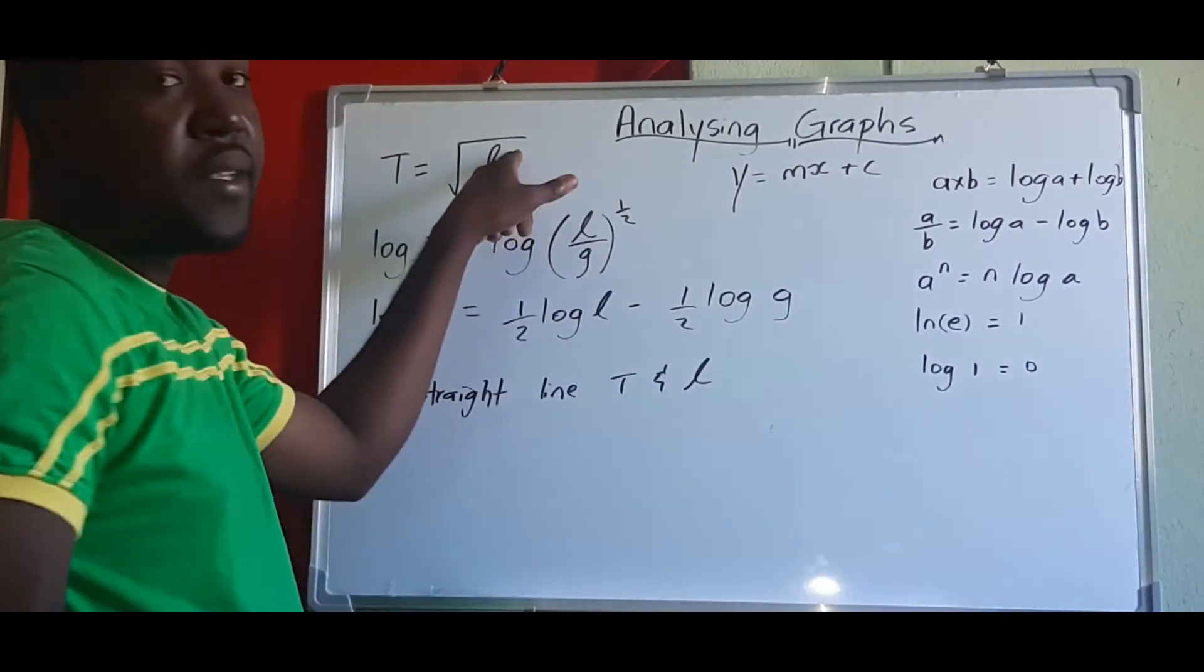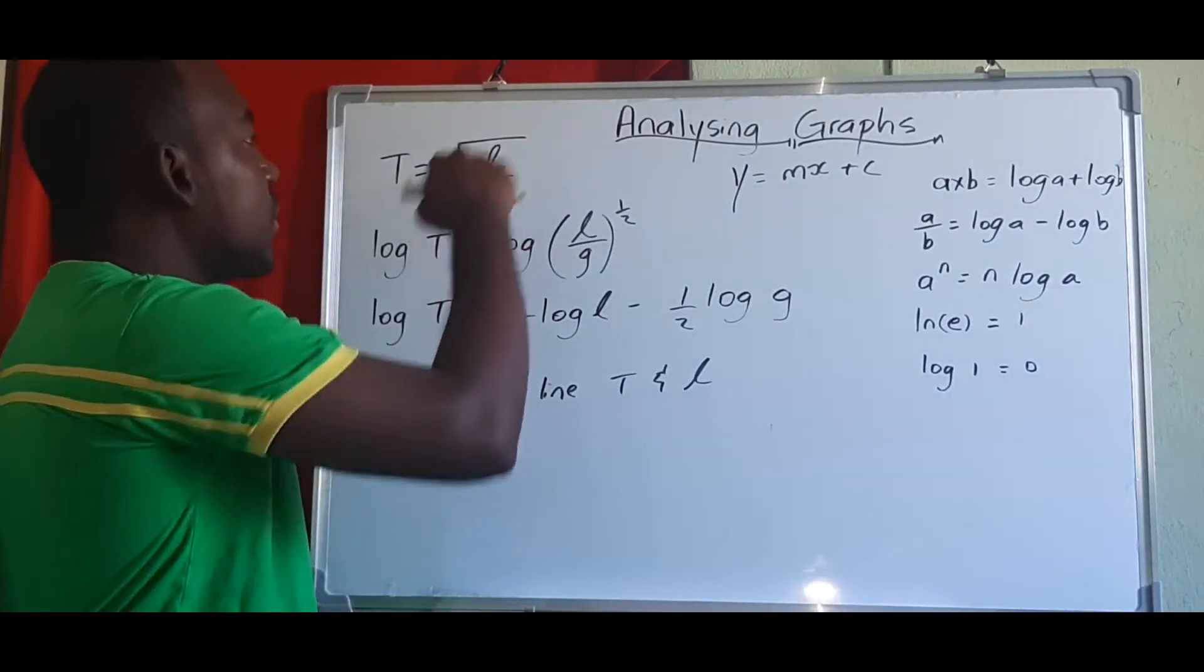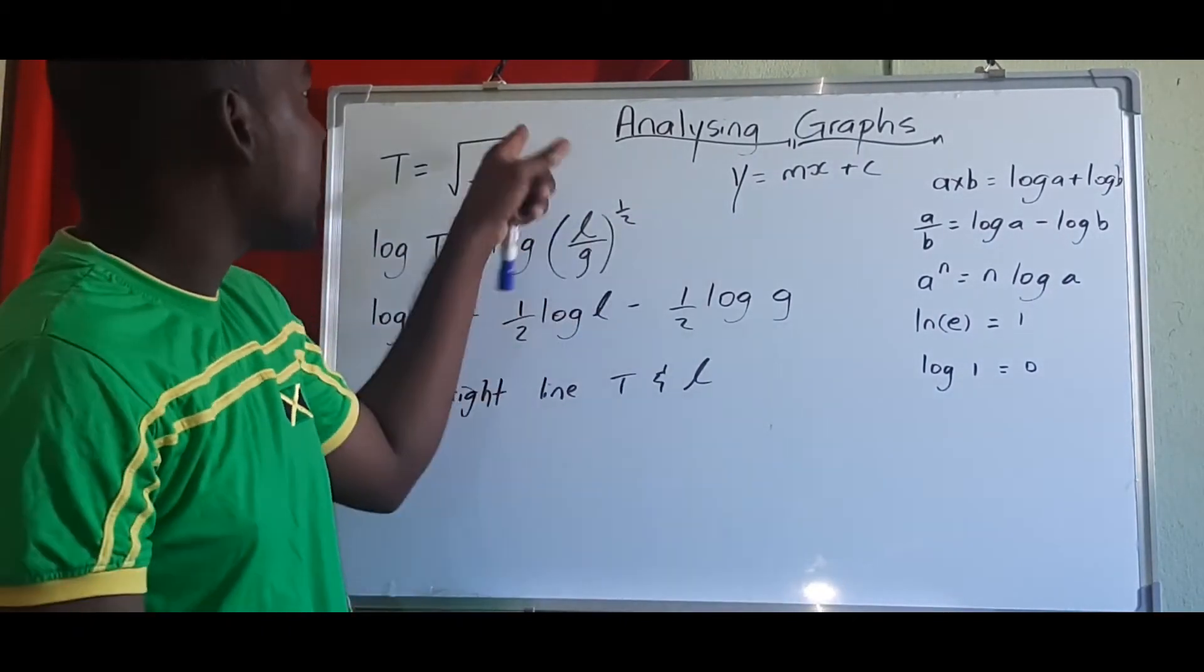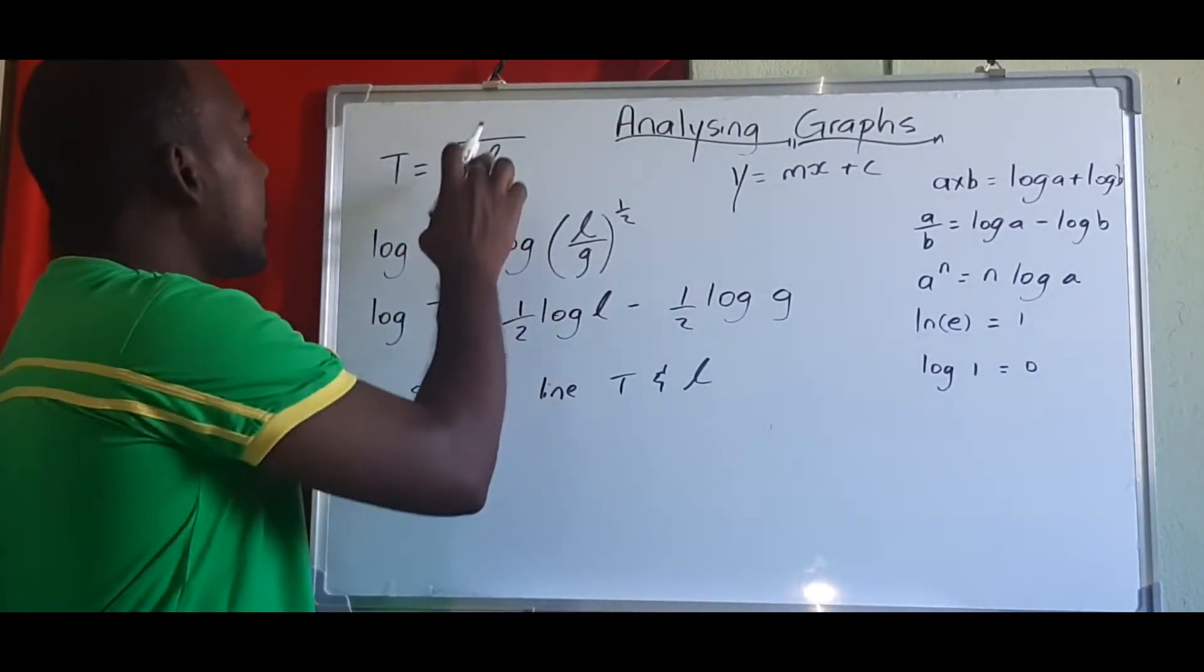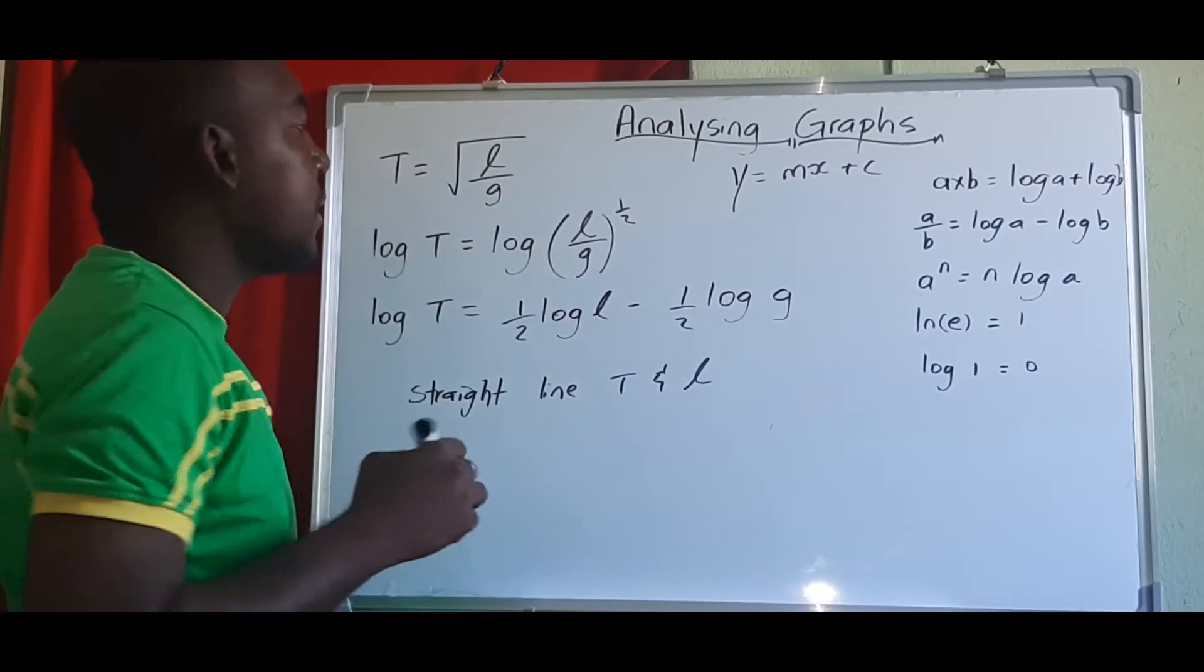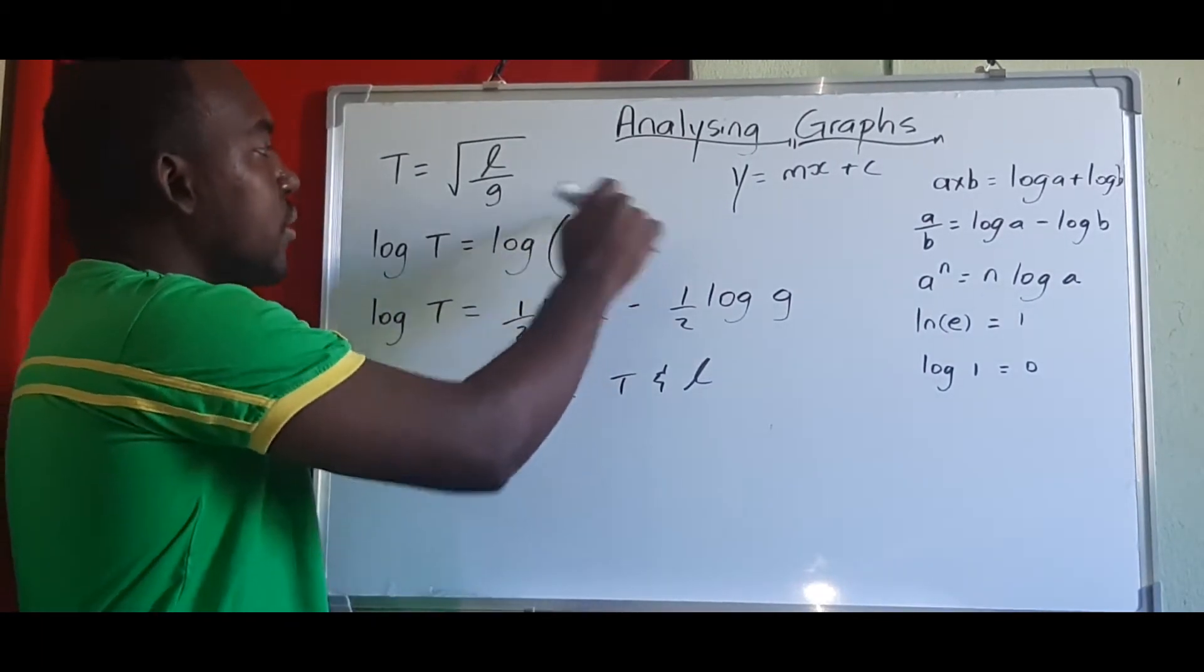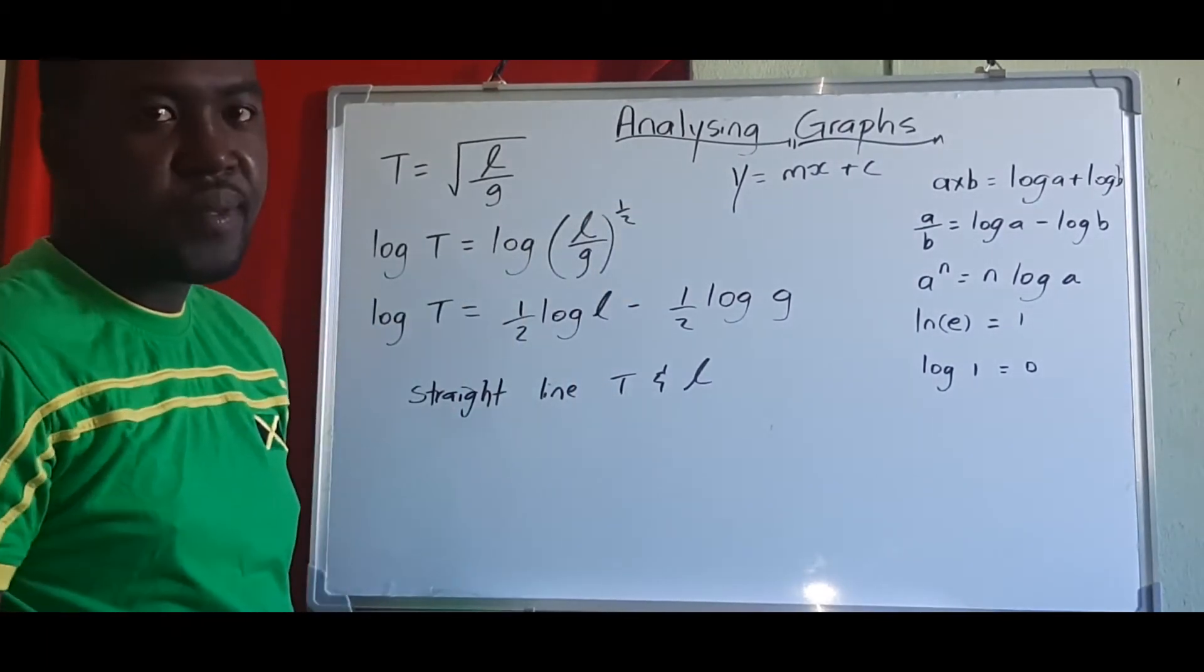But we know that l now is actually the square root of l. So we need to get rid of the square root to make it become a straight line. So that means the square root of l over g is the same as l over g to the power of a half.